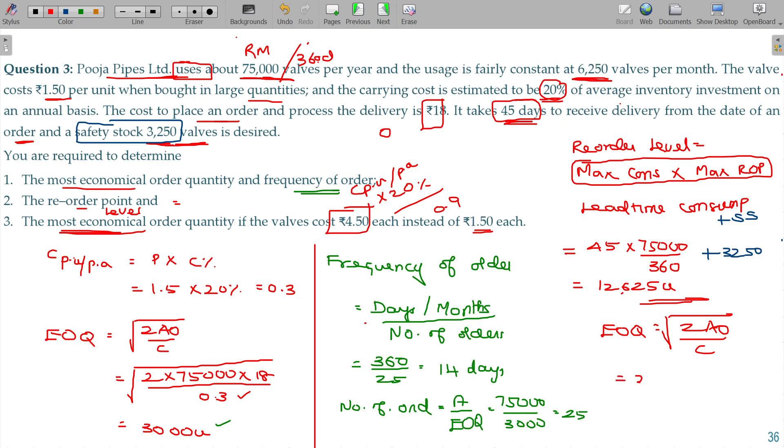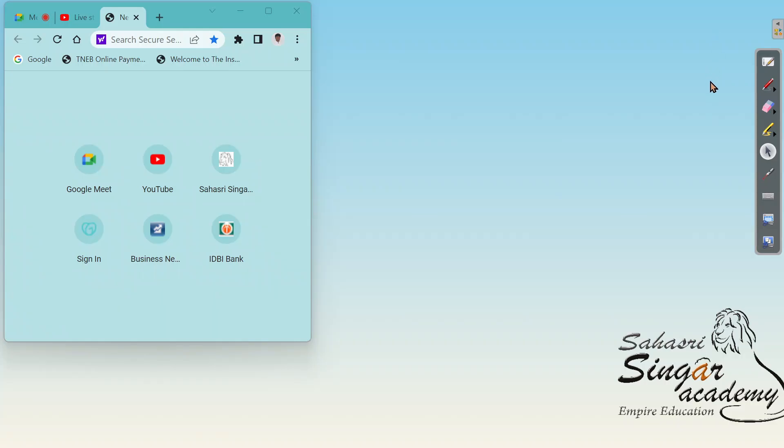Because of the price change, annual consumption remains the same, ordering cost remains the same, but carrying cost increases from 0.3 to 0.9. Then the ultimate value is 1,732 - that's the revised EOQ. Clear?